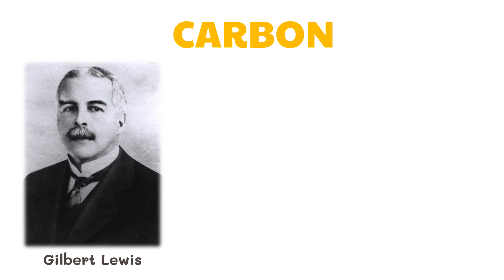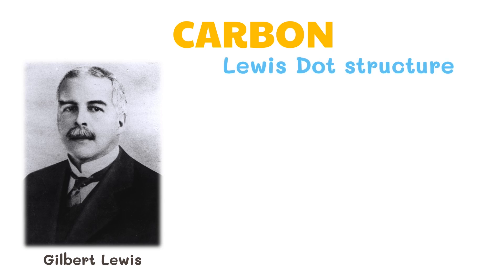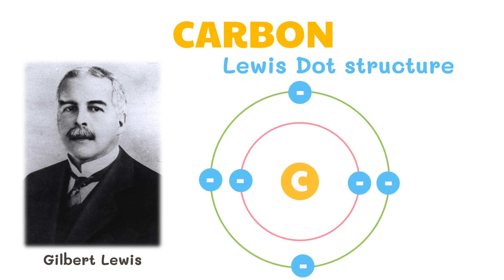Gilbert Lewis, an American physical chemist, discovered the covalent bond and his concept of electron pairs. Lewis's thought structures and other contributions to the valence bond theory have shaped modern theories of chemical bonding. Carbon bonds to other atoms not by losing nor gaining, but by sharing its electrons. The four valence electrons of carbon represent the four dots of carbon in its Lewis dot structure. For a hydrogen atom, its valence electron is represented by one dot.